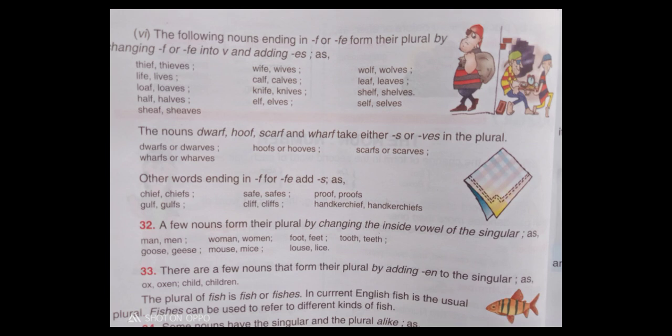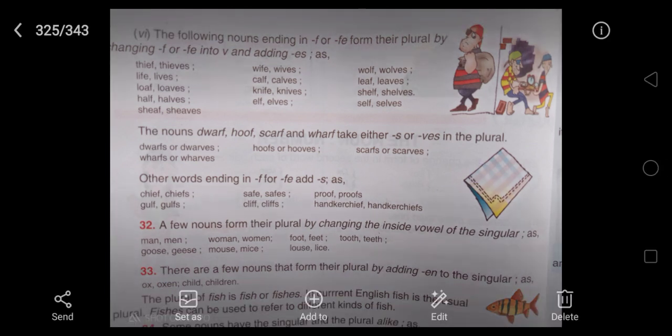The nouns dwarf, hoof, scarf, and wharf take either S or VES in the plural: dwarfs or dwarves, hoofs or hooves, scarfs or scarves, wharfs or wharves. Other words ending in F or FE add S, as: chief, chiefs; safe, safes; proof, proofs; gulf, gulfs; cliff, cliffs; handkerchief, handkerchiefs.